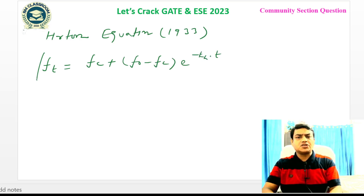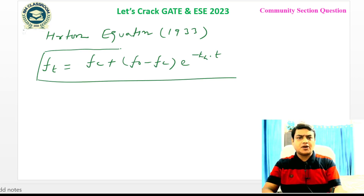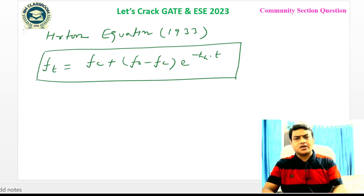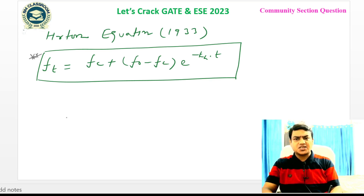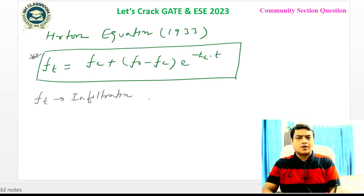This Horton's equation is very important; it has appeared in exams repeatedly, almost every alternate year. It is the equation for infiltration capacity given in 1933. Let us first write down all the terms. Ft is the infiltration capacity at time T.